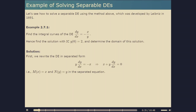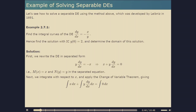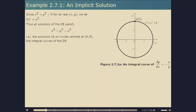First, we write the DE in separated form: y dy/dx equals minus x, or x plus y dy/dx equals 0. Integrating with respect to x and applying the change of variable theorem, we get x squared over 2 plus y squared over 2 equals a constant. Since x squared plus y squared is always non-negative, we let the constant 2c equal a squared and write the solutions as x squared plus y squared equals a squared — a family of circles concentric about the origin with radius a. These are the integral curves of the DE.